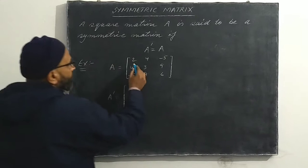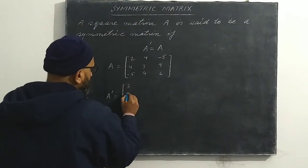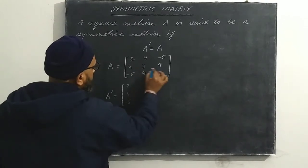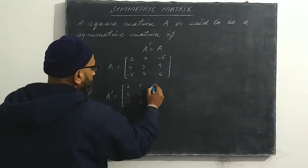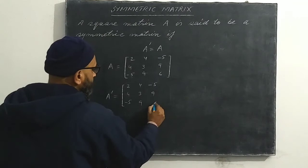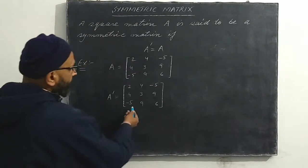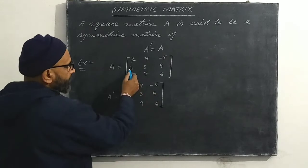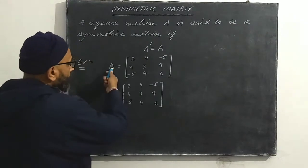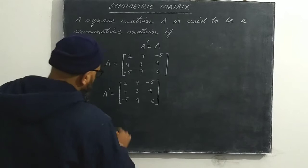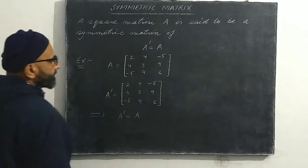Making the first column the first row, we write: two, four, minus five; four, three, nine; and minus five, nine, six. After interchanging all the rows and columns we still have the same matrix. So taking the transpose of matrix A gives us matrix A itself, which implies that A transpose equals A. Thus A is a symmetric matrix.